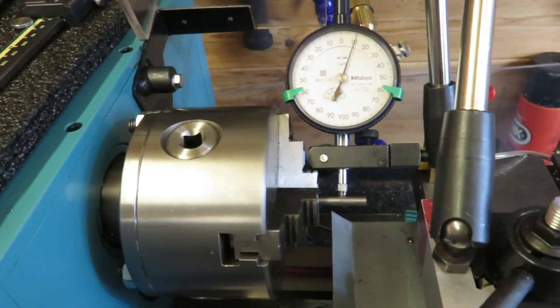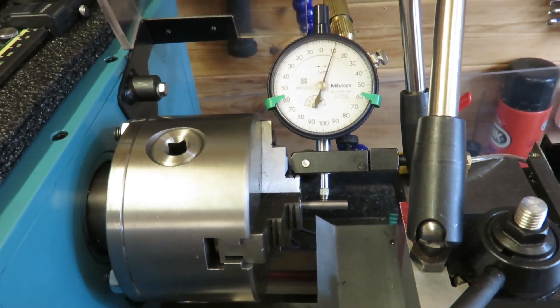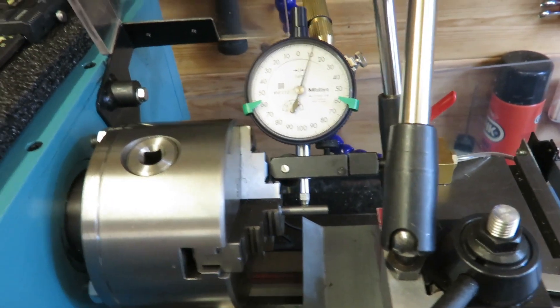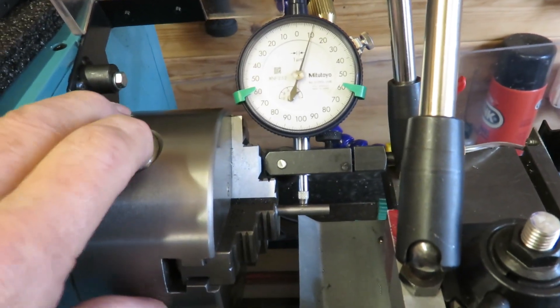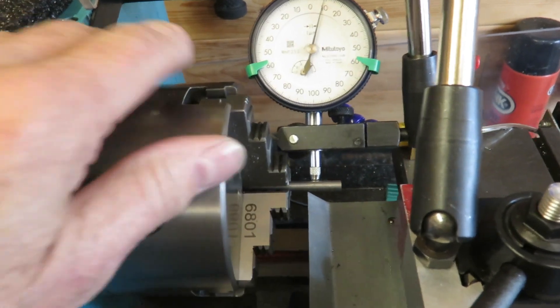I've got a four-jaw which obviously you can get the run-out to be damn near zero, but on a three-jaw chuck it's normally several thousandths. This has always been very good, so I thought I'd have a look and see just what it is.